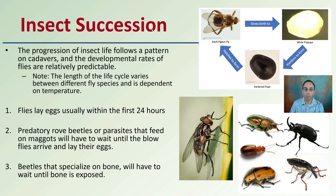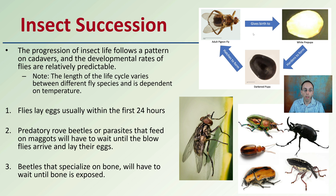The length of the life cycle varies between different fly species and is dependent on temperature. That can help us backtrack or determine how long that corpse has been there, or potentially the temperature, based on the insects that are present. Typically flies lay eggs within the first 24 hours, and then predatory rove beetles or parasites that feed on maggots will have to wait until the blowfly arrives and lays its eggs. We're going to focus on the blowfly in particular.